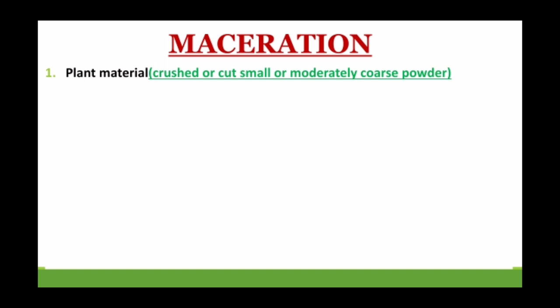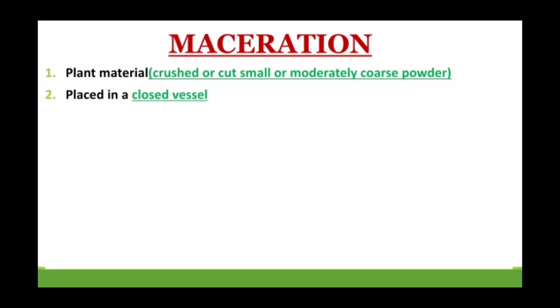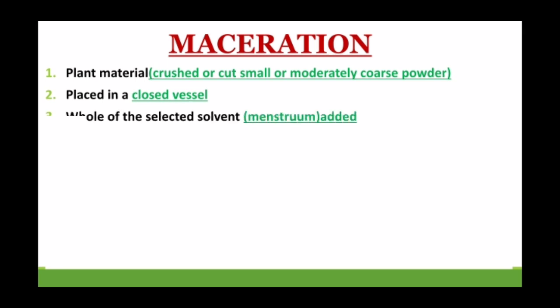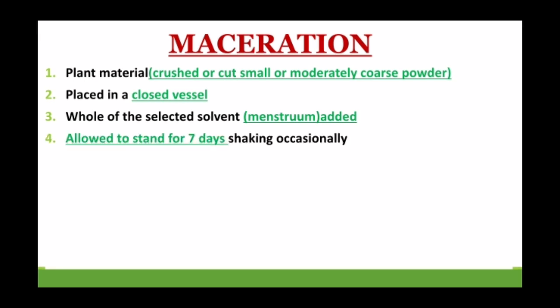If the plant material is in powdered form, we take it as a moderately coarse powder. We place it in a closed vessel and add the selected solvent — that is the menstruum. After mixing both the plant material and the solvent, we allow it to stand for 7 days.